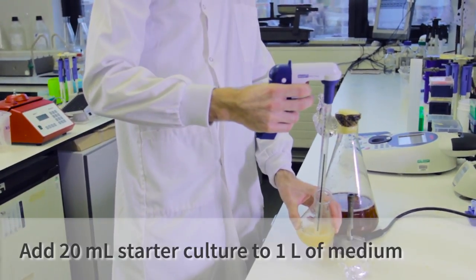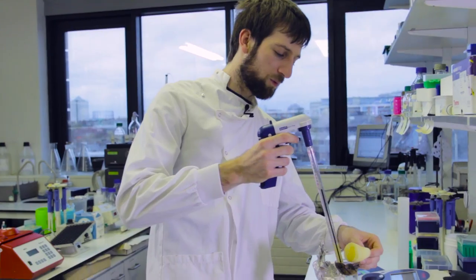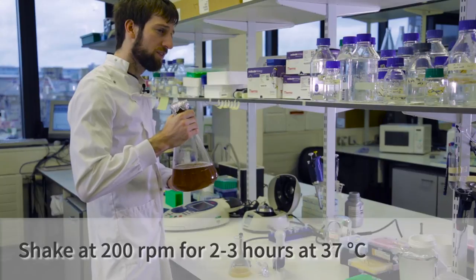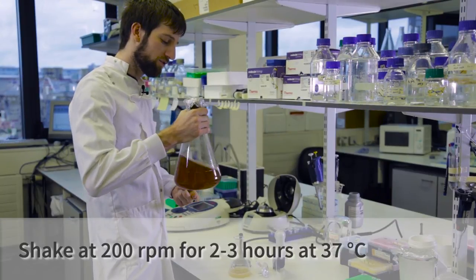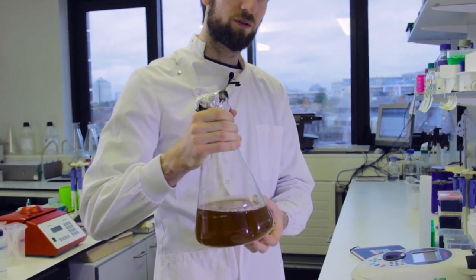I'm going to use 20 mls of starter culture to inoculate one liter. This means we'll get to a good optical density of cells when we're ready to express our protein. Now we take our cells and put them at 37 degrees at 200 rpm shaking to make sure we get enough oxygen into the media to grow the cells to a high cell density.